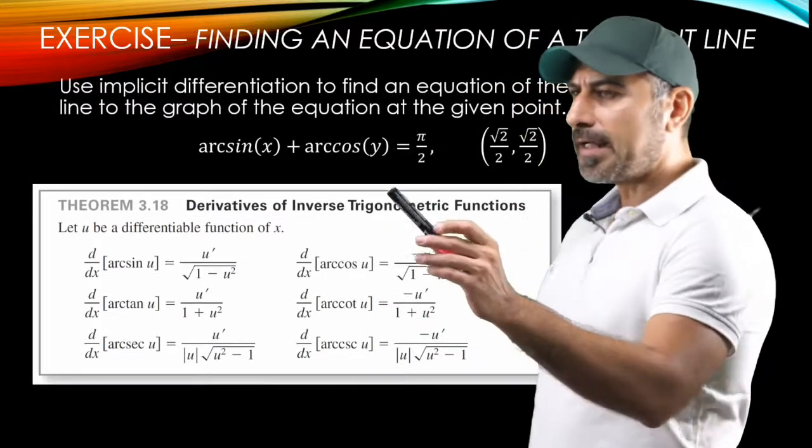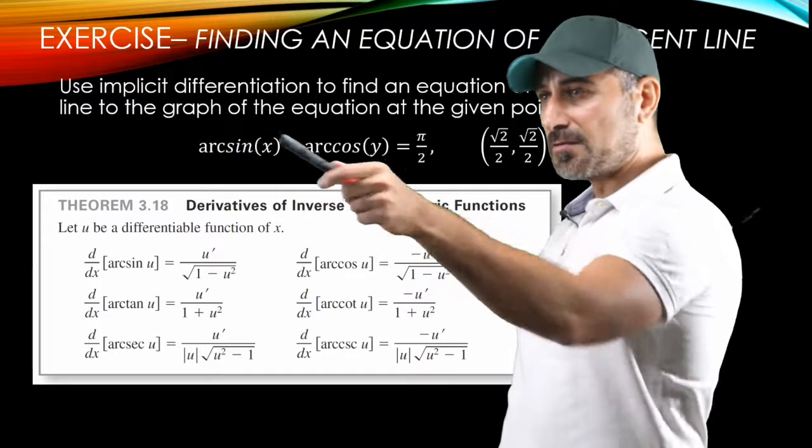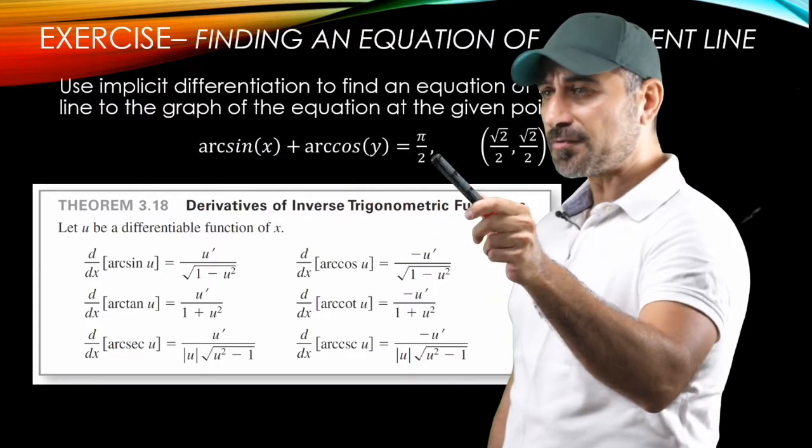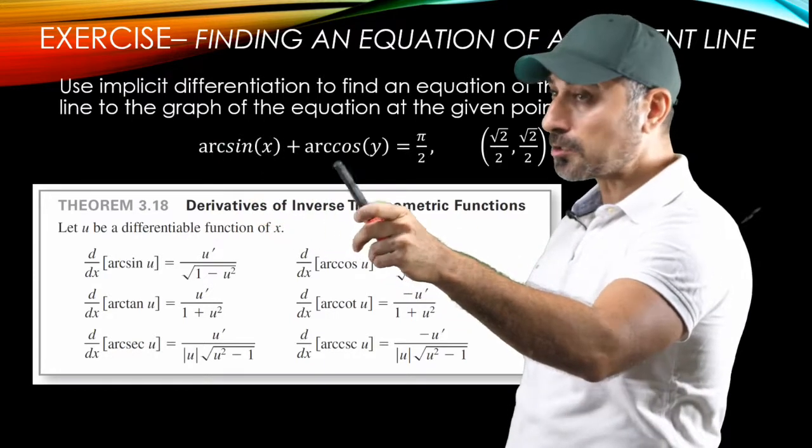So for the implicit differentiation of this function, where we're going to take the derivative of the left-hand side and the derivative of the right-hand side, we're going to need the derivative of arc sine and arc cosine.